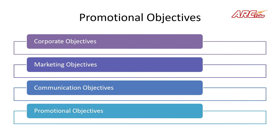Promotional objectives originate from a cascading effect: communication objectives are derived from marketing objectives, which are derived from corporate objectives. The promotional objectives must therefore align with corporate objectives — such as revenue and profit targets — otherwise the company will go in one direction while your promotional objectives achieve something else.